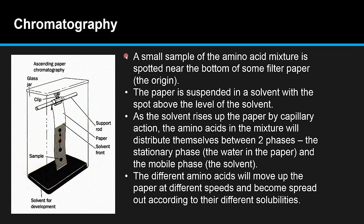The first step: a small sample of the amino acid mixture is spotted near the bottom of some filter paper, and we call that the origin. This spot here is the mixture of amino acids which you want to separate, and you make sure it's above the solvent that you're going to use.